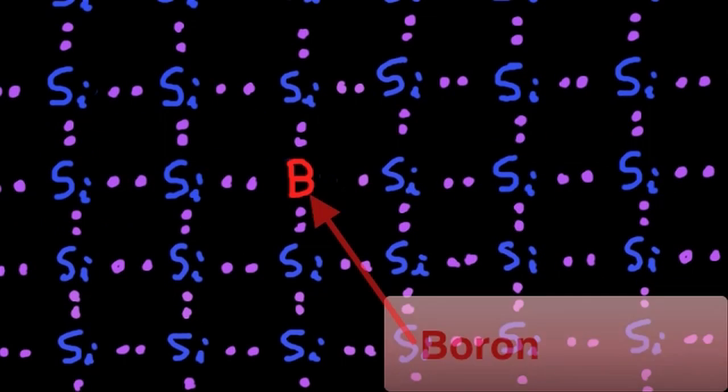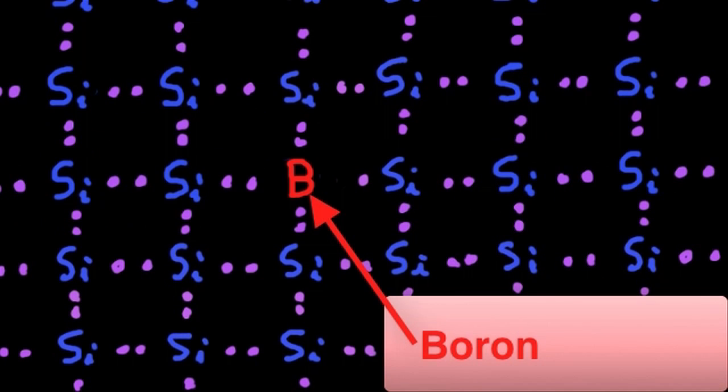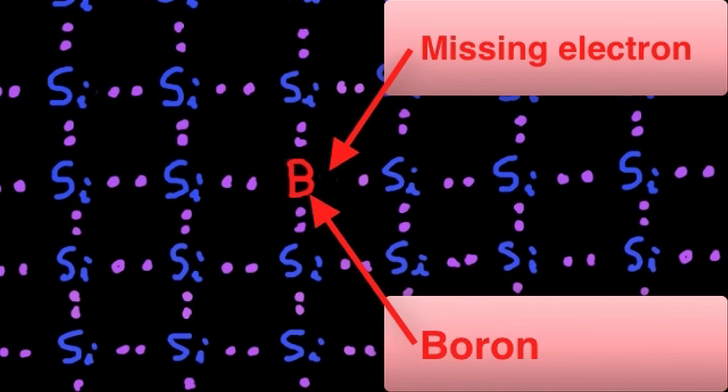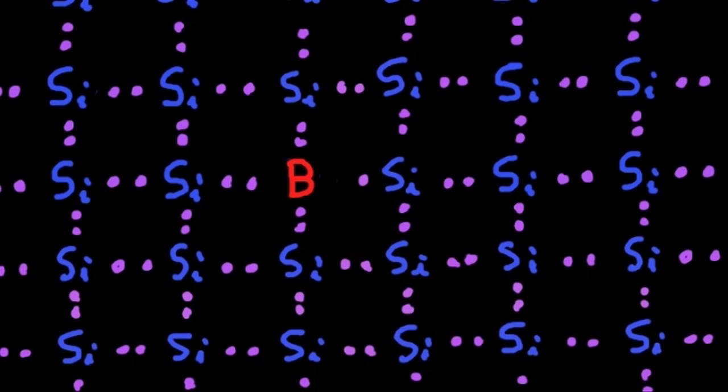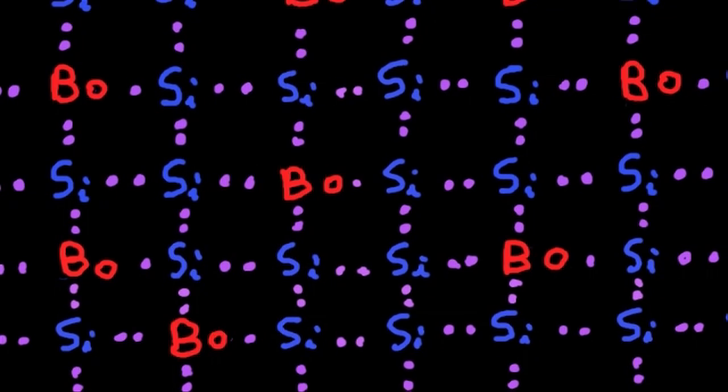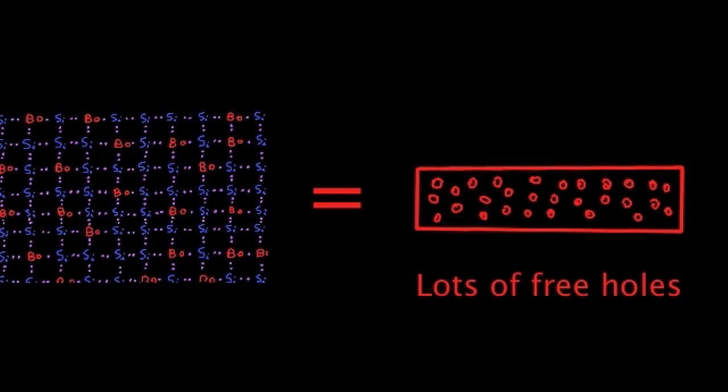We can also add boron instead of phosphorus to the silicon. This time, the boron atoms have one less electron than what would be necessary for a nice layout. You can think of the lack of electron as a hole that would be free to travel through the structure. Therefore, adding a lot of boron atoms to the silicon will result in a lot of free holes in the structure. This arrangement is called P-type, as it's going to be on the positive side.